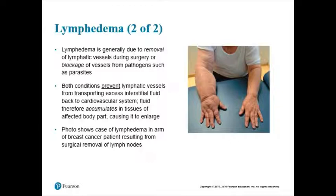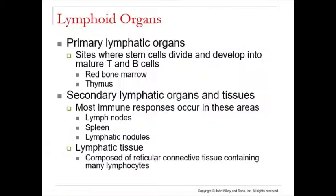There are so many organs in the lymphatic system that we categorize them. They fall into one of two groups: primary lymphatic organs and secondary lymphatic organs. If you are a place where lymphocytes are made and/or matured, you are a primary lymphatic organ. If not, you are secondary. You already know the answer from our previous chapter.